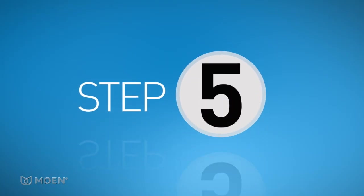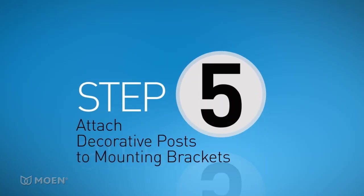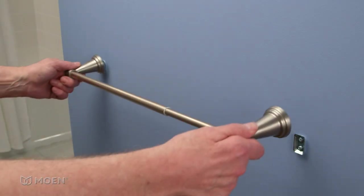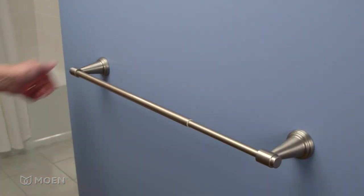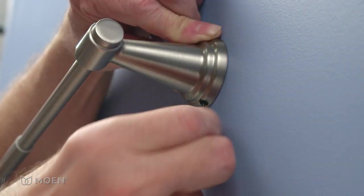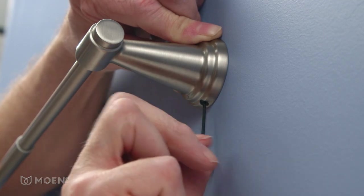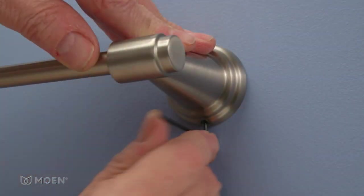The last step is attaching the decorative post to the mounting brackets. Place the post on the mounting brackets with the set screws facing down. Using the provided Allen wrench, tighten the set screws to secure the decorative posts in place.